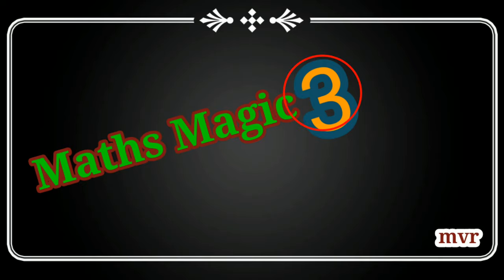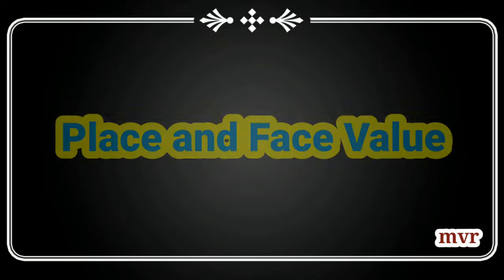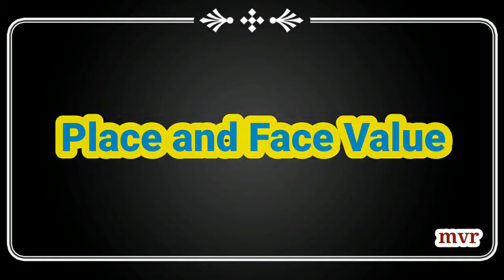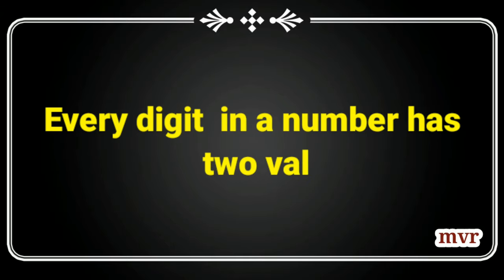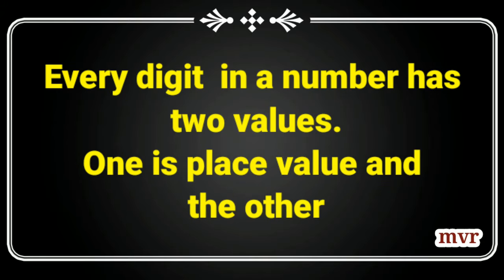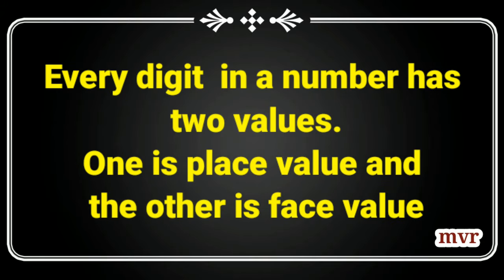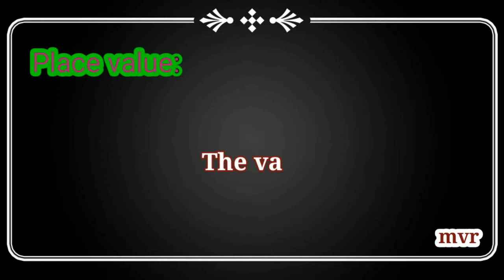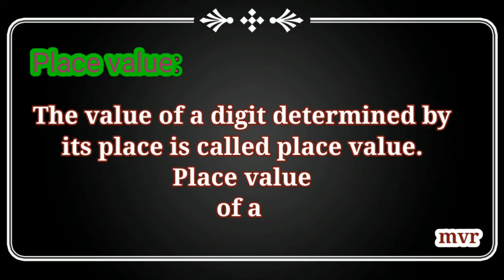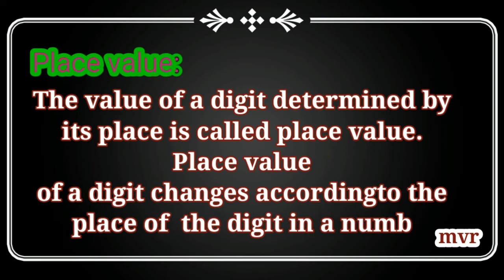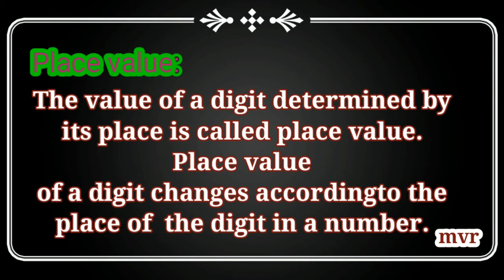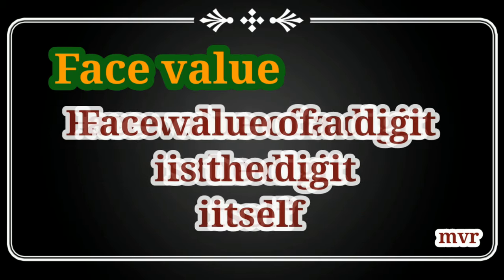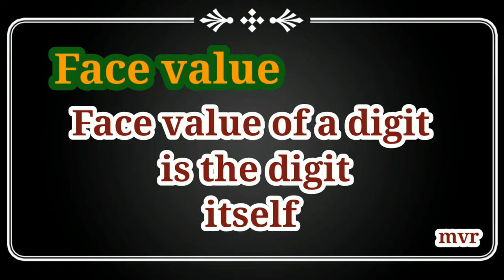Mathematics, third class — place value and face value. Every digit in a number has two values: one is place value and the other is face value. The value of a digit determined by its place is called place value. Place value of a digit changes according to the place of the digit in a number. The face value of a digit is the digit itself.